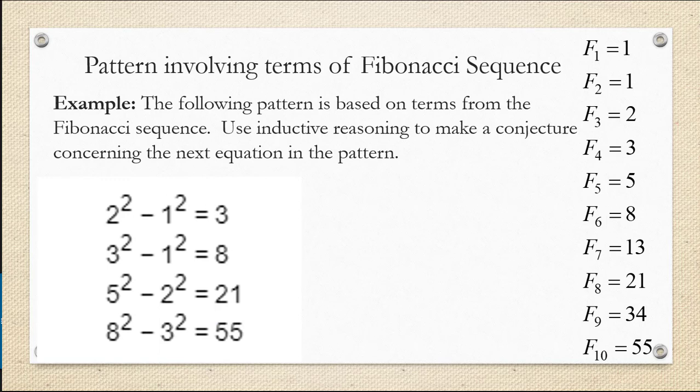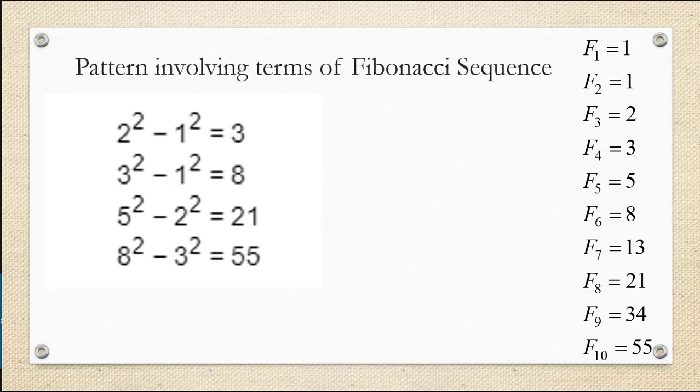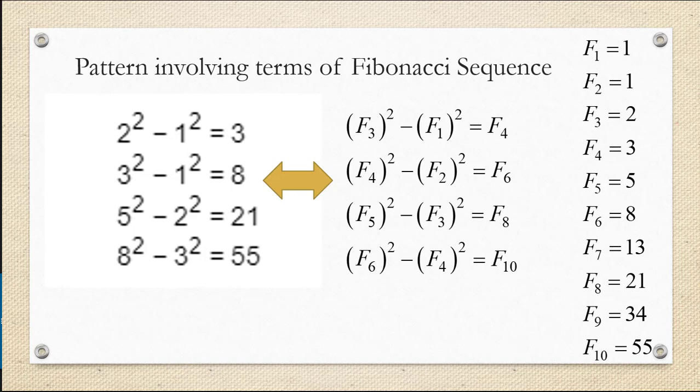Now the reason this is helpful is we can now replace each of the numbers in the equations with their symbol from the Fibonacci sequence. So I'm going to take this list of equations and rewrite it, replacing each number with its symbol like 2 is actually F sub 3.